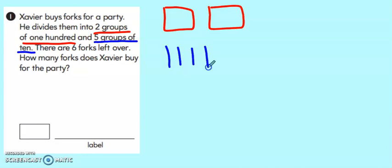10, 20, 30, 40, 50. Since the problem told me that they were groups of 10, I put them into 10s. And last, there are six forks left over. Now these are just six random forks laying around. So I'm going to use my ones to represent those. Still using my good organizing.